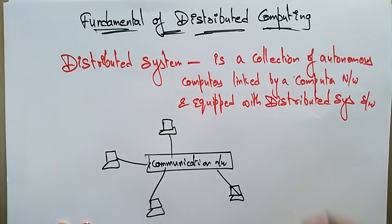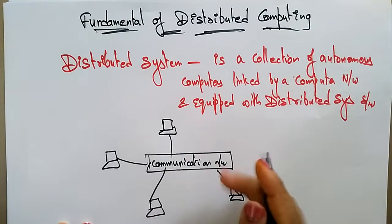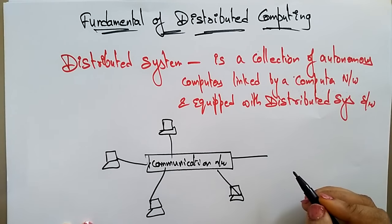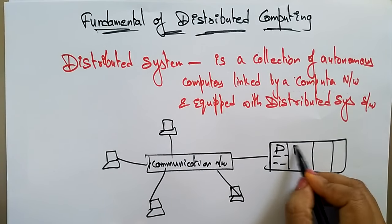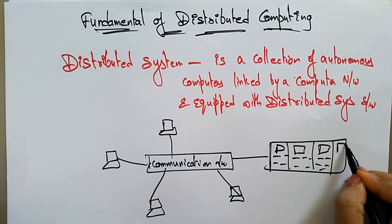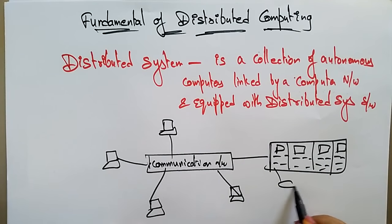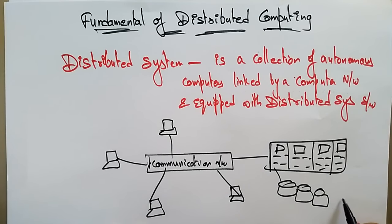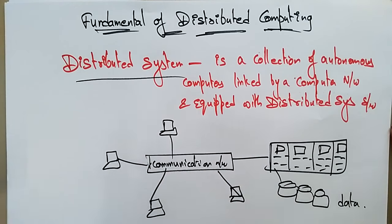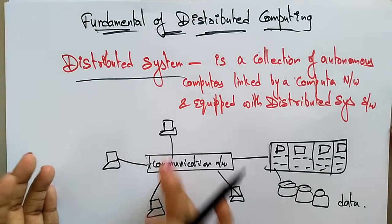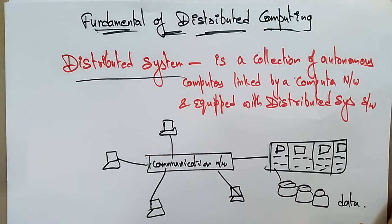All these computers are equipped with distributed system software — that is, a middleware. Each and every system has its own operating system, and all are equipped with this distributed system software. So this is essentially what a distributed system is: different independent computers communicating with the help of a communication network.